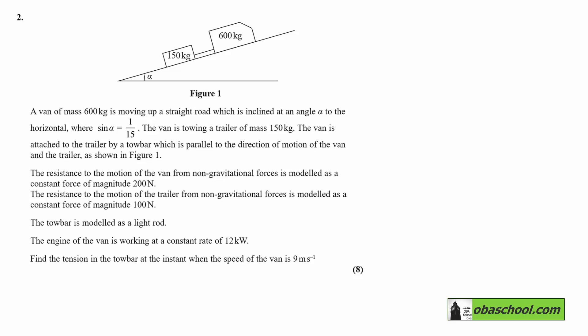A van of mass 600 kilograms is moving up a straight road, which is inclined at an angle alpha to the horizontal, where sine alpha is 1/15th.